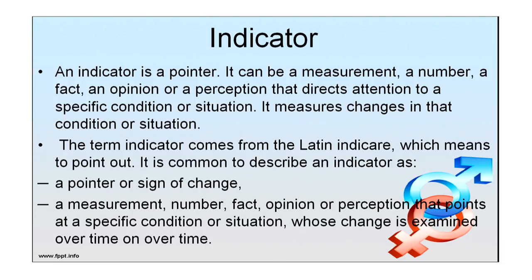Before we start, let us discuss what an indicator is all about. An indicator is a pointer — it can be a measurement, a number, a fact, an opinion or a perception that directs attention to a specific condition or situation. It measures changes in that condition or situation. The term indicator comes from the Latin word meaning to point out, to focus around.